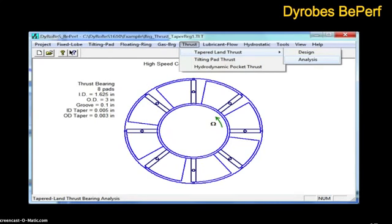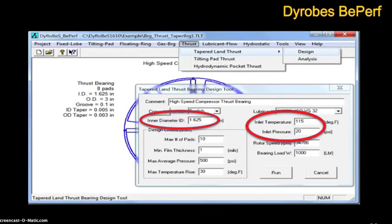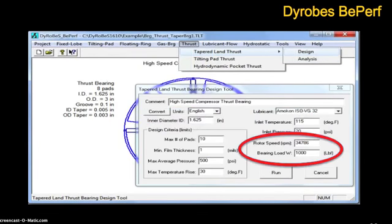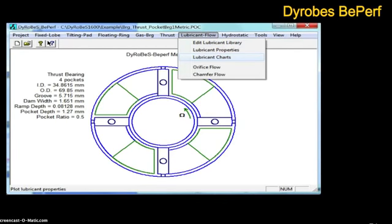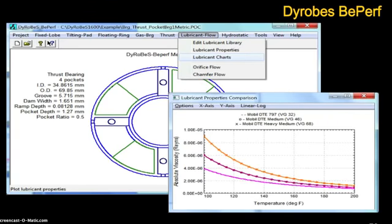In addition to analyzing your existing bearings, you can also design your own bearings. Dyrobes lets you enter all the criteria you need. For example, to design this taper land thrust bearing, you enter the inner diameter, the inlet temperature, inlet pressure, rotor speed, and the bearing load. You also have many different lubricants to select from. Dyrobes automatically provides default data if you don't enter all the data. There are also many different tools to help analyze and design your bearings. With this example of a four pocket bearing, you can model and compare how different lubricants will work. You can compare viscosity, density, and ultimately determine the best oil for your system.